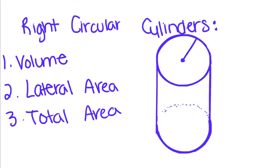Today we're going to move on from talking about prisms to talking about the right circular cylinder. We're going to go over volume, lateral area, and total area of a right circular cylinder today.